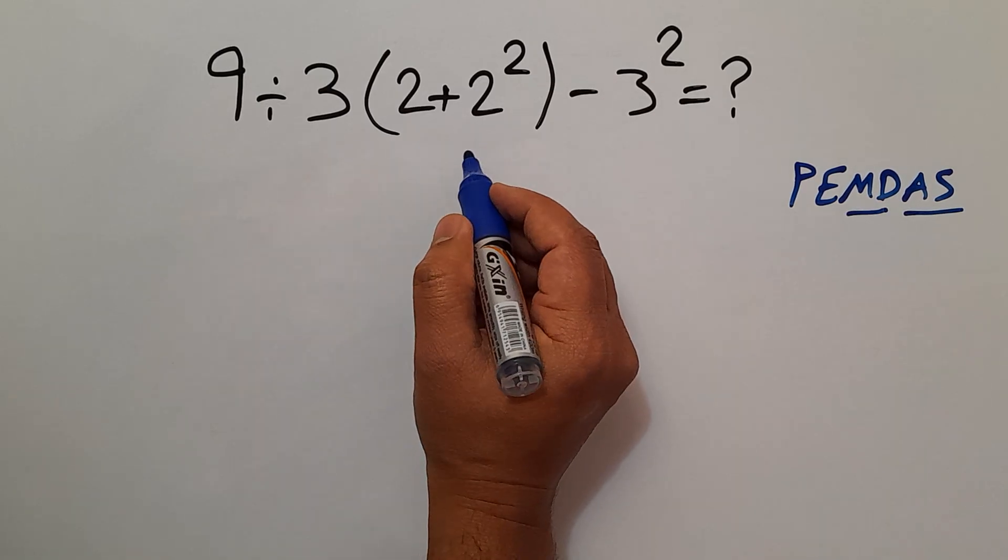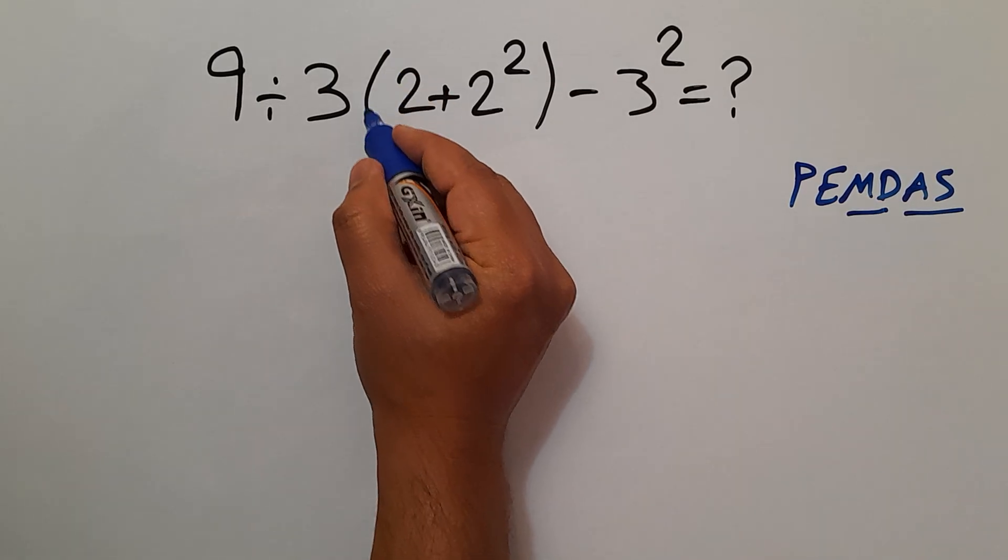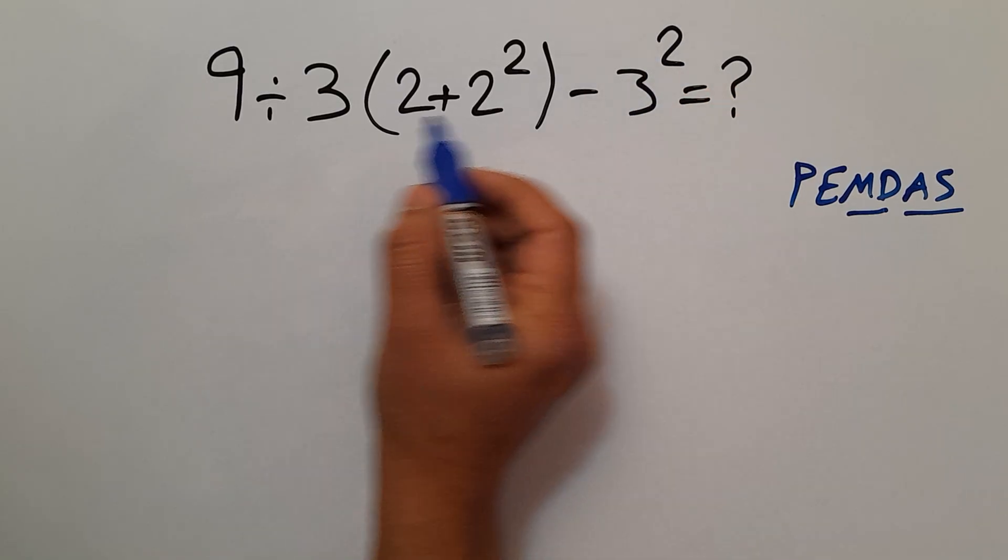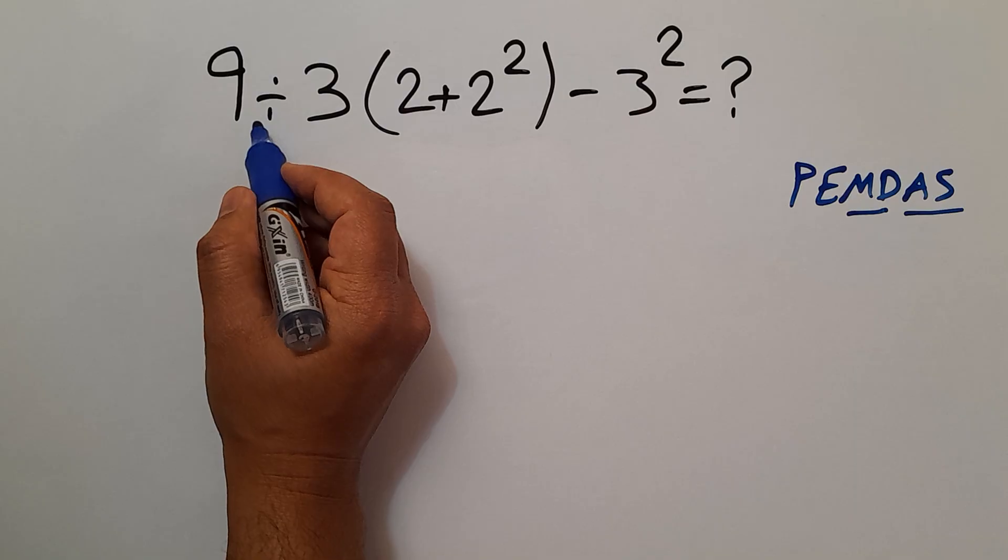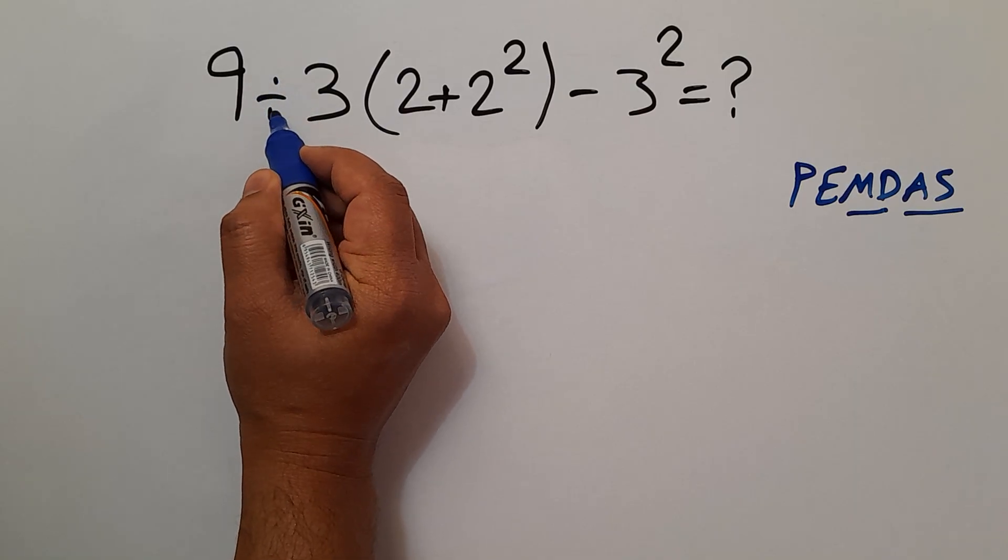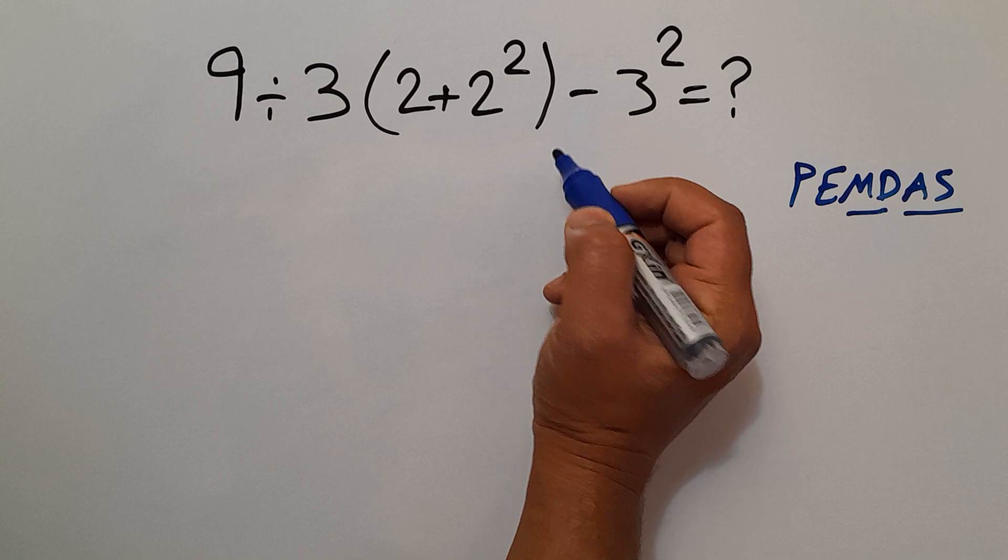So here, first we have to handle these parentheses, then this exponent, and excuse me, next we have to handle this division, and finally this subtraction.